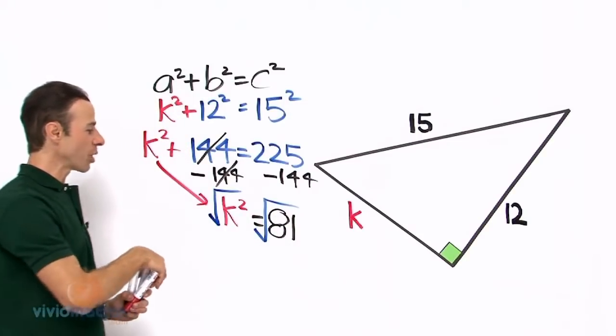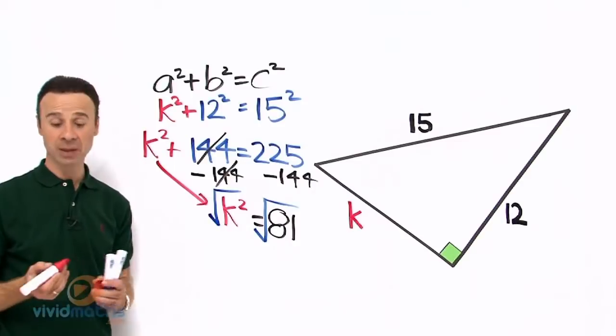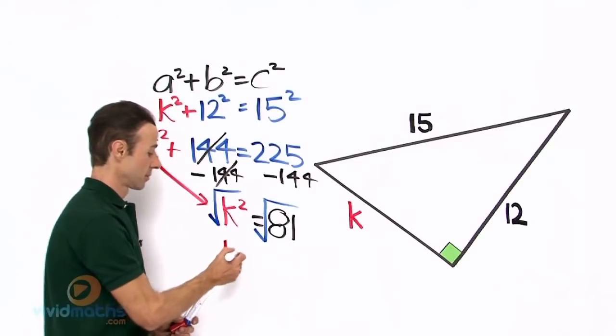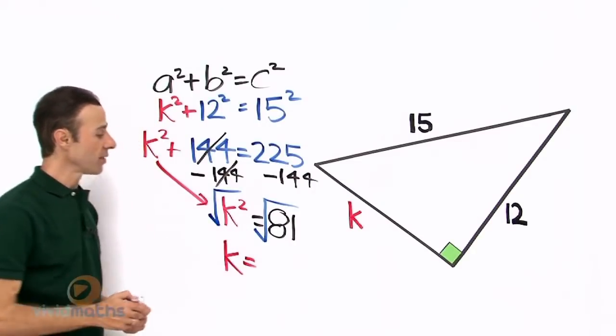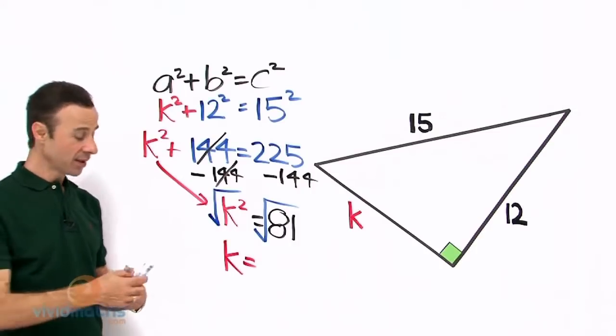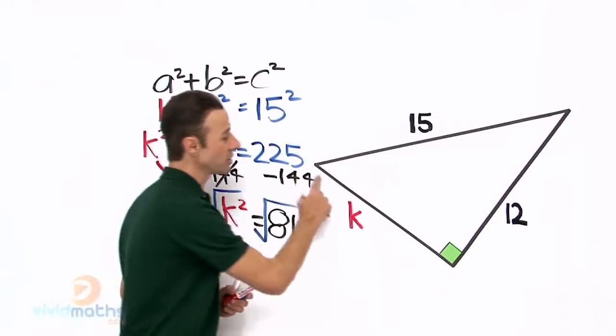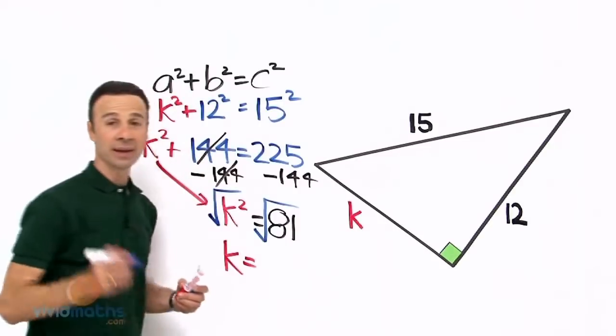When we take the square root of K², that becomes just K. And the square root of 81 is the answer to this length - what K is - which is 9.